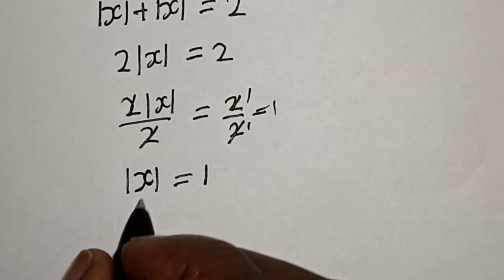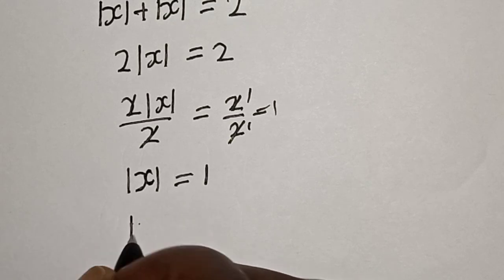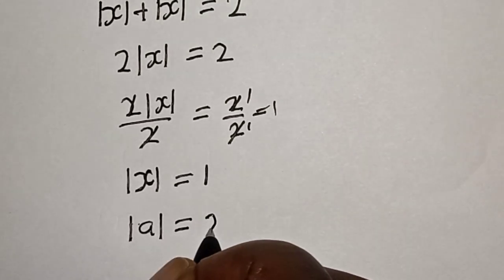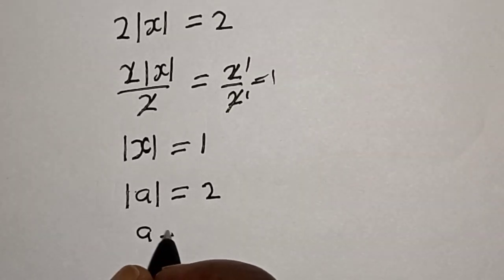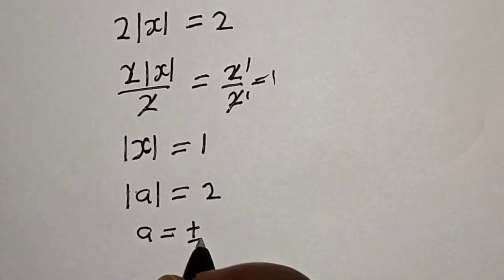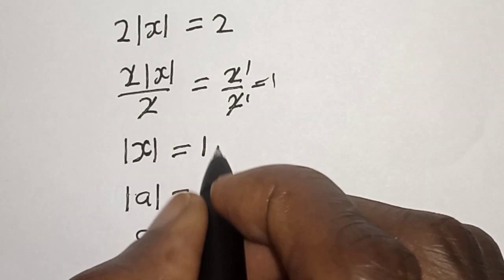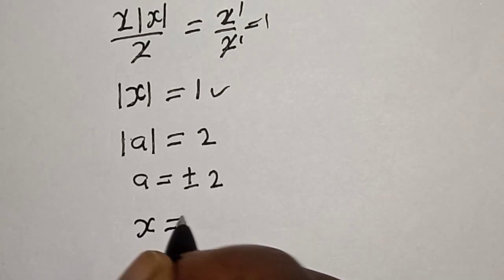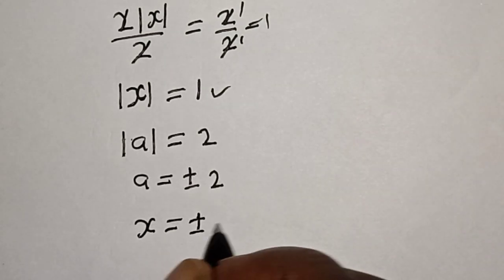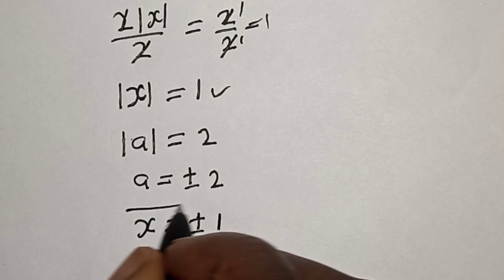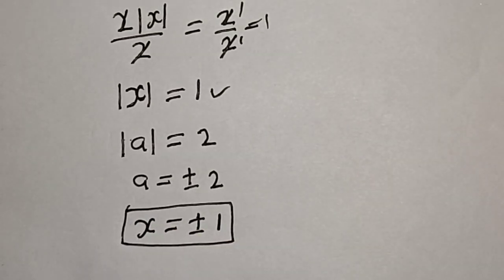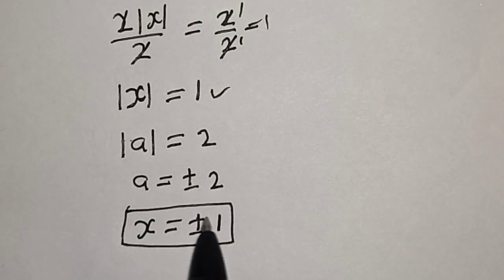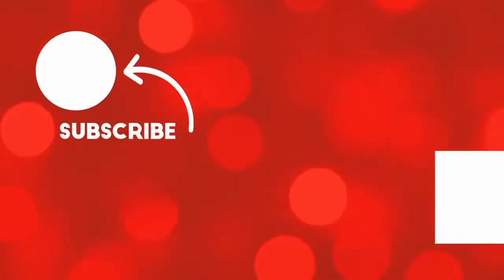Take note: if you have absolute value of a equal to 2, then a is equal to plus or minus 2. In this case, our final answer is s is equal to plus or minus 1. If you enjoyed the class, please don't forget to like, share, comment, and subscribe. Thank you.